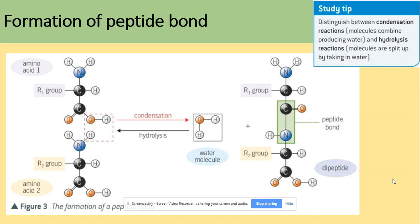Formation of a polypeptide: a peptide bond forms between nitrogen and carbon. That part of each of the amino acids will be removed to produce a peptide bond, as shown here. So this is the peptide bond between the nitrogen and the carbon.